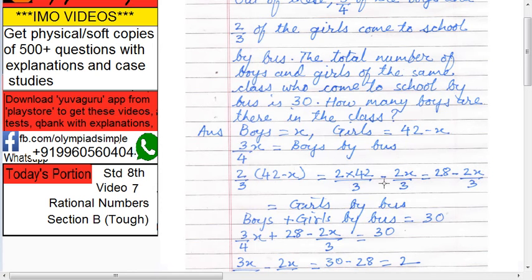Now this is girls by bus and that is boys by bus. Now boys plus girls by bus is given as 30. So 3x/4 plus 28 minus 2x/3 equals to 30. Now you have to solve this only.